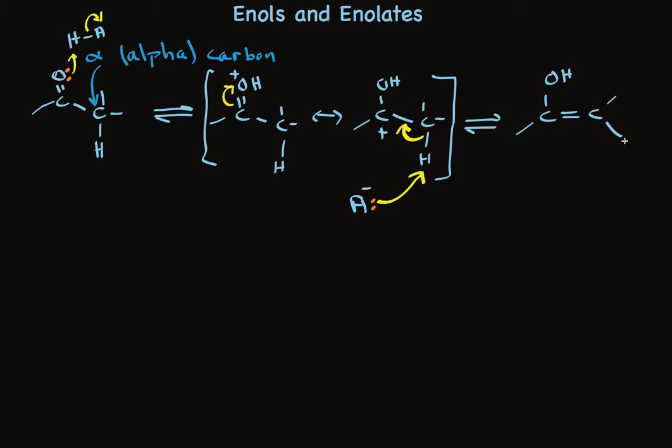Notice I've been careful to write equilibrium signs for these reversible reactions. Both of these steps are reversible. So enols are formed in acid. In base, we form enolates.